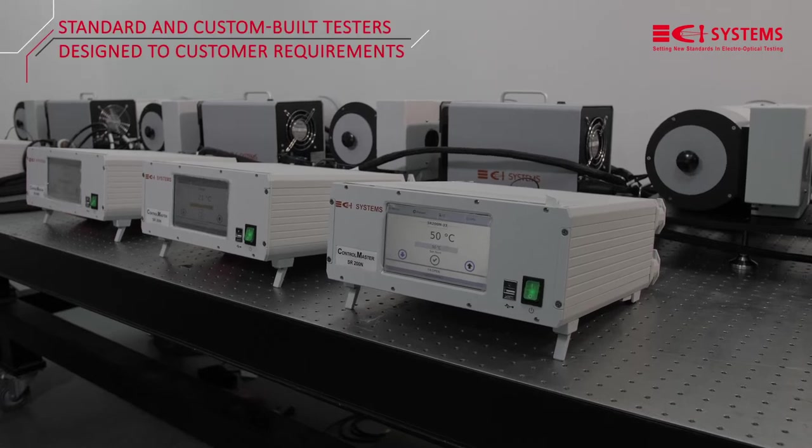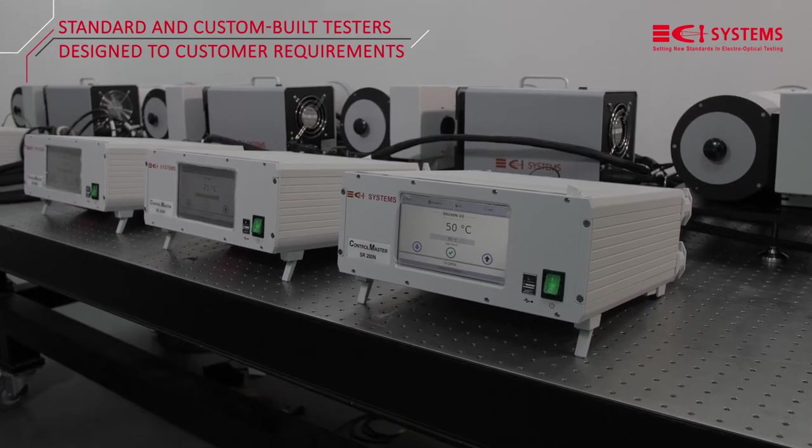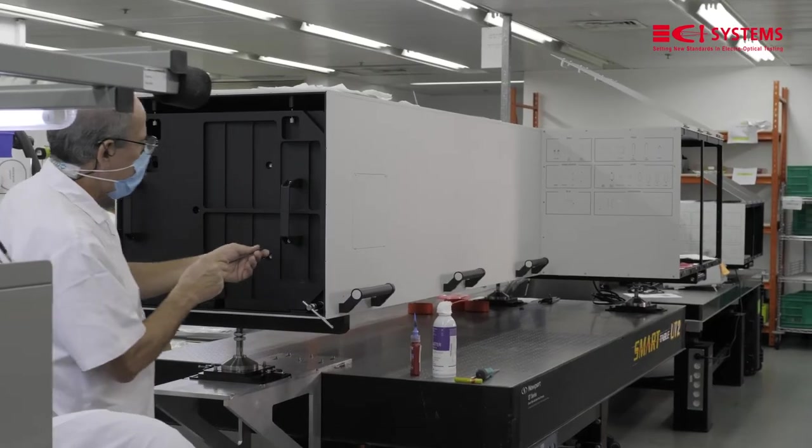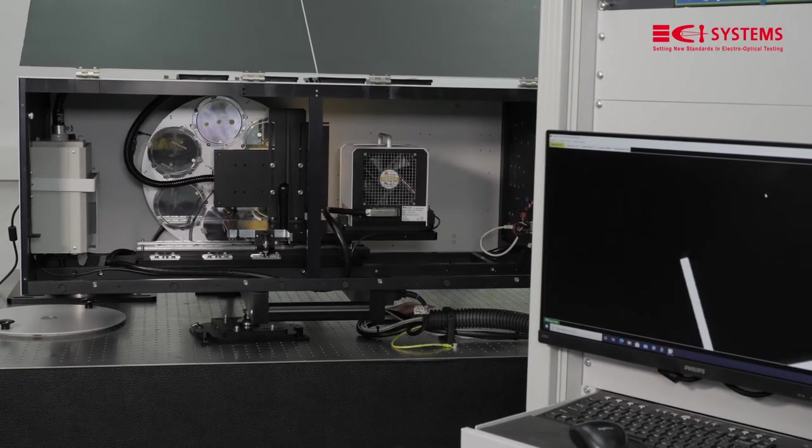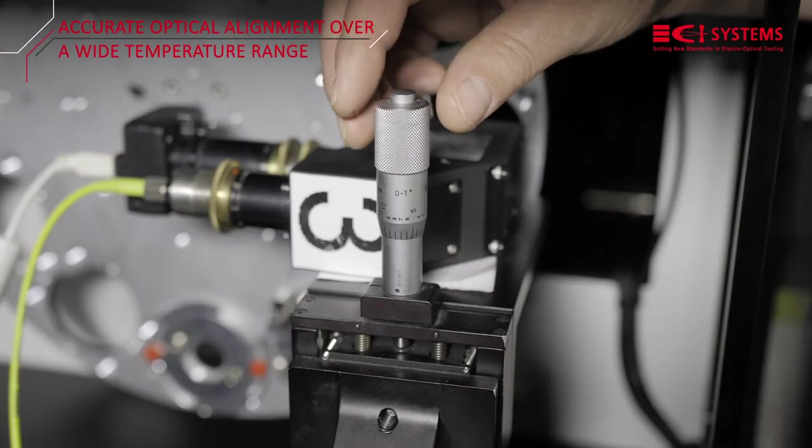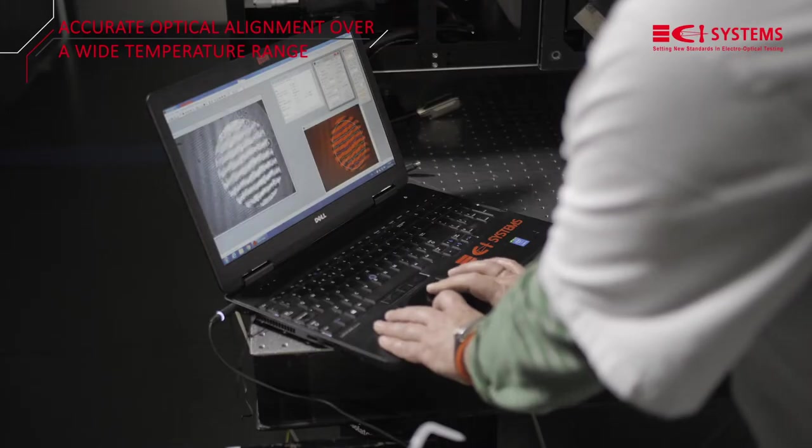CI Systems standard test systems come in every conceivable size, from four-inch medium aperture collimators through 19-inch apertures. Optical alignment remains accurate and reliable through a wide ambient temperature range.